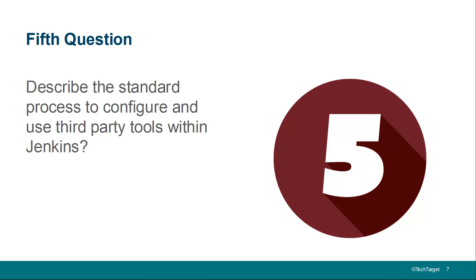There are some exceptions to that. For example, if you're using CheckStyle or PMD and you're doing a Maven build, Maven can automatically download those products, so you don't have to do that configuration step. But overall, the four steps are: download the product and install it, add the plugin for that particular product, configure that product as a tool inside of Jenkins if necessary, and then finally just use it in your builds.